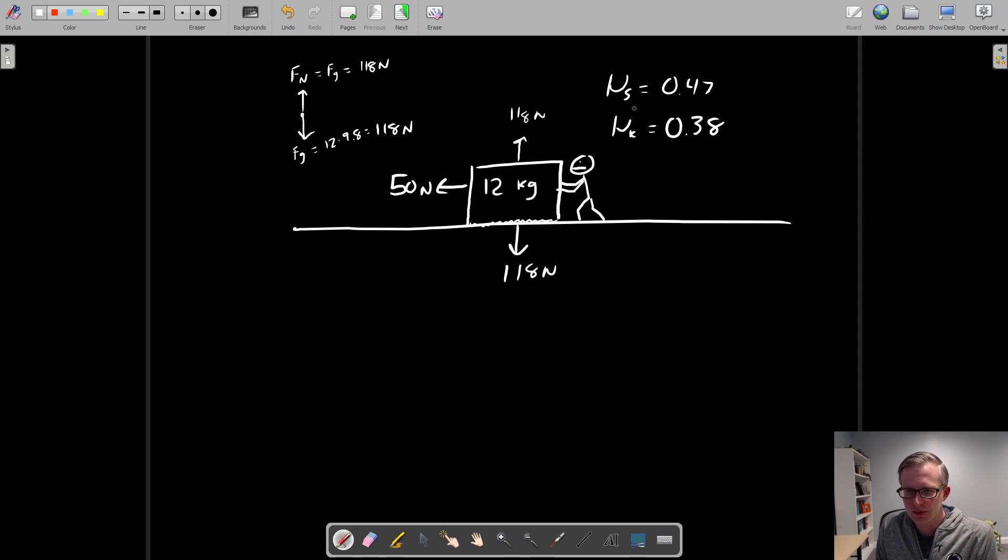The reason why it's always lower is because once an object starts moving, those peaks and valleys of the two surfaces are riding along each other on the top rather than nestling in or settling in to remain motionless. So we have our mu values here, and that means we can actually find the force of friction in the opposite direction.